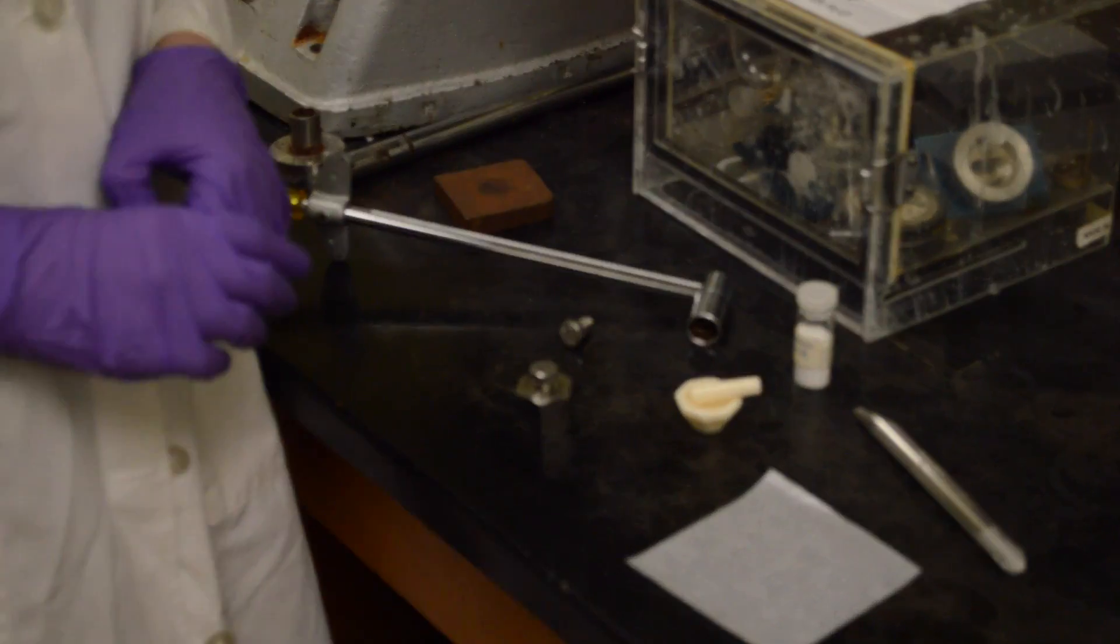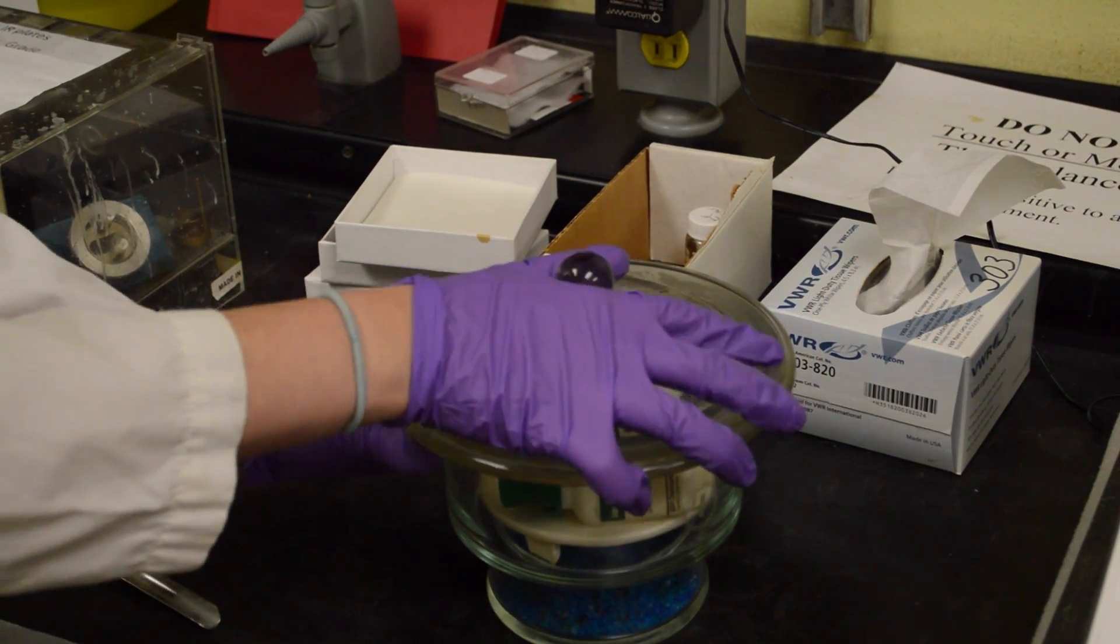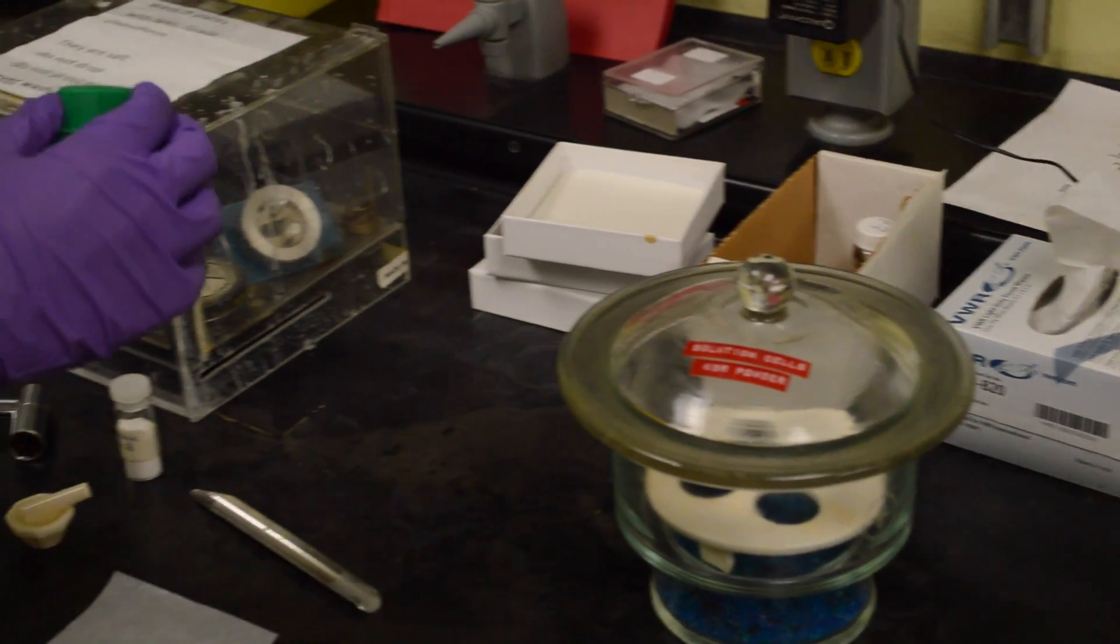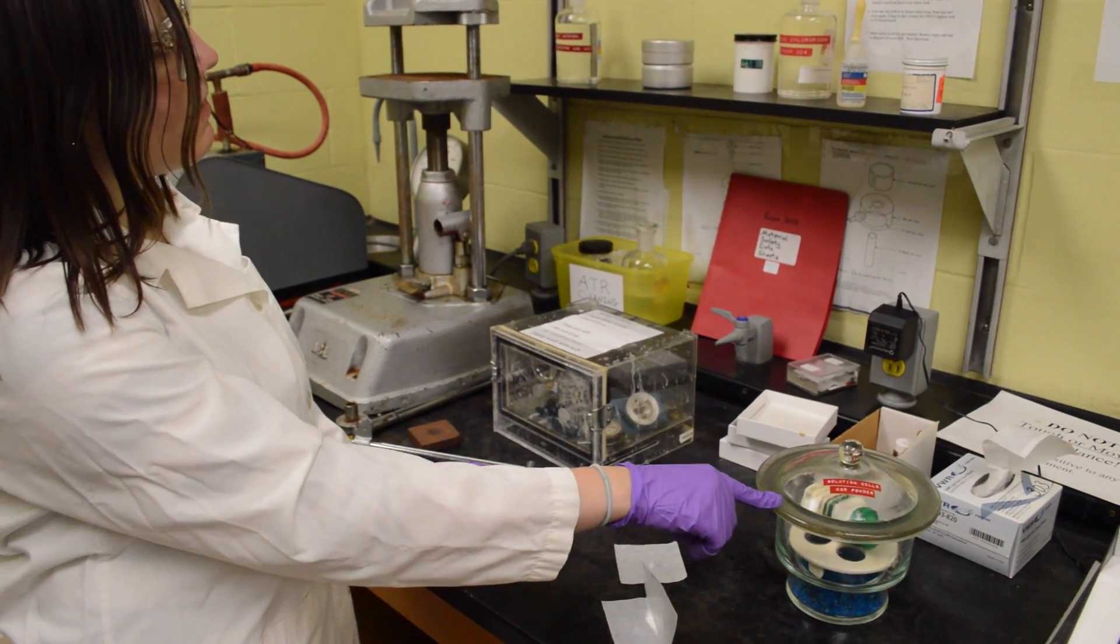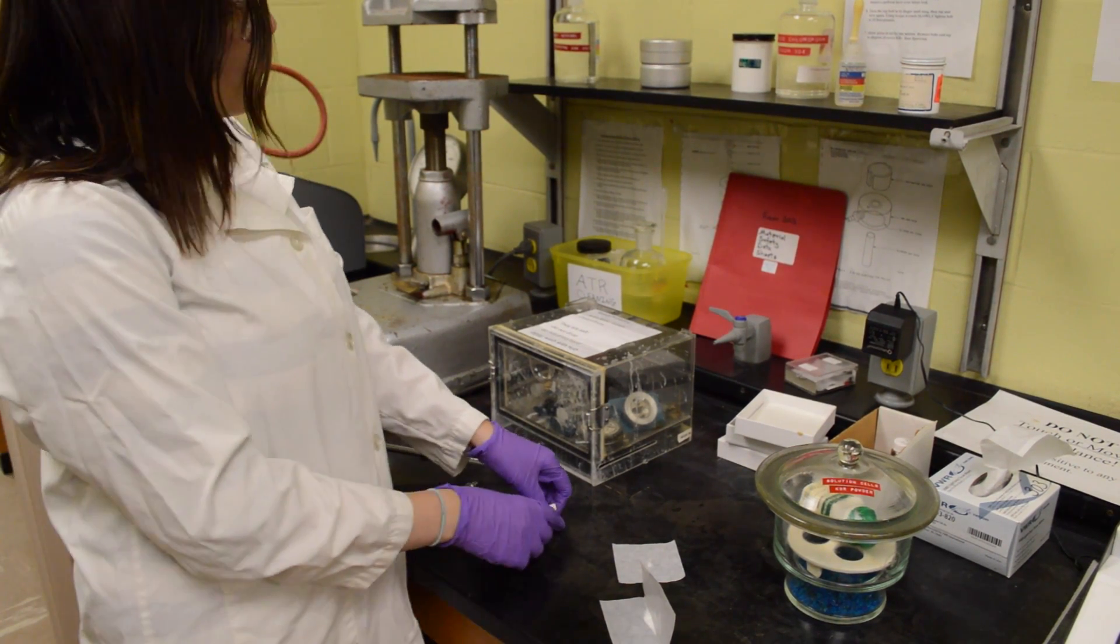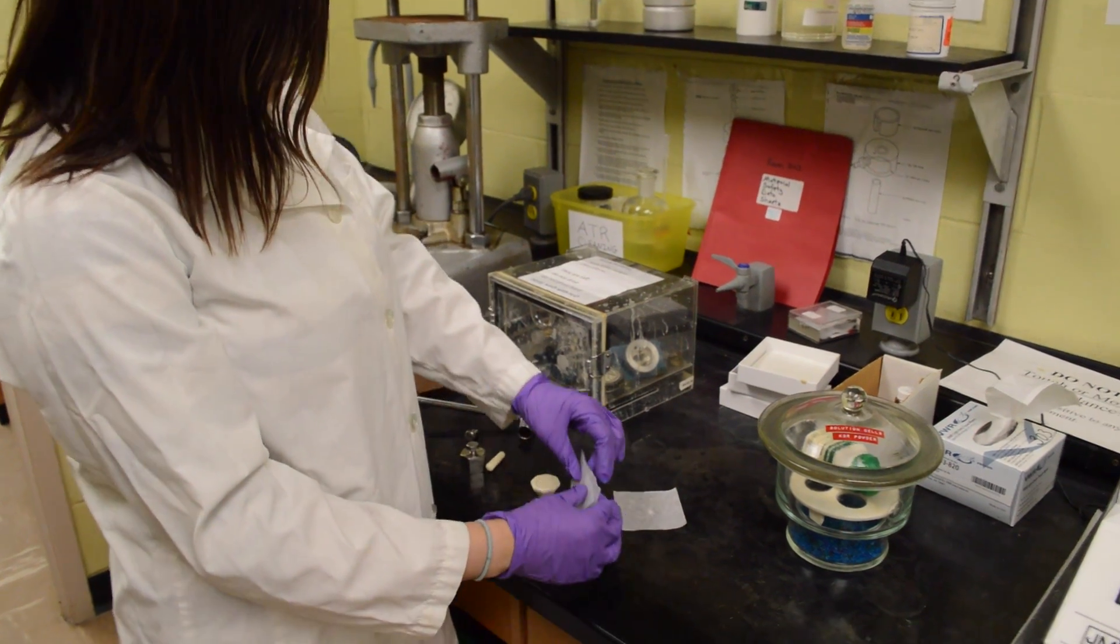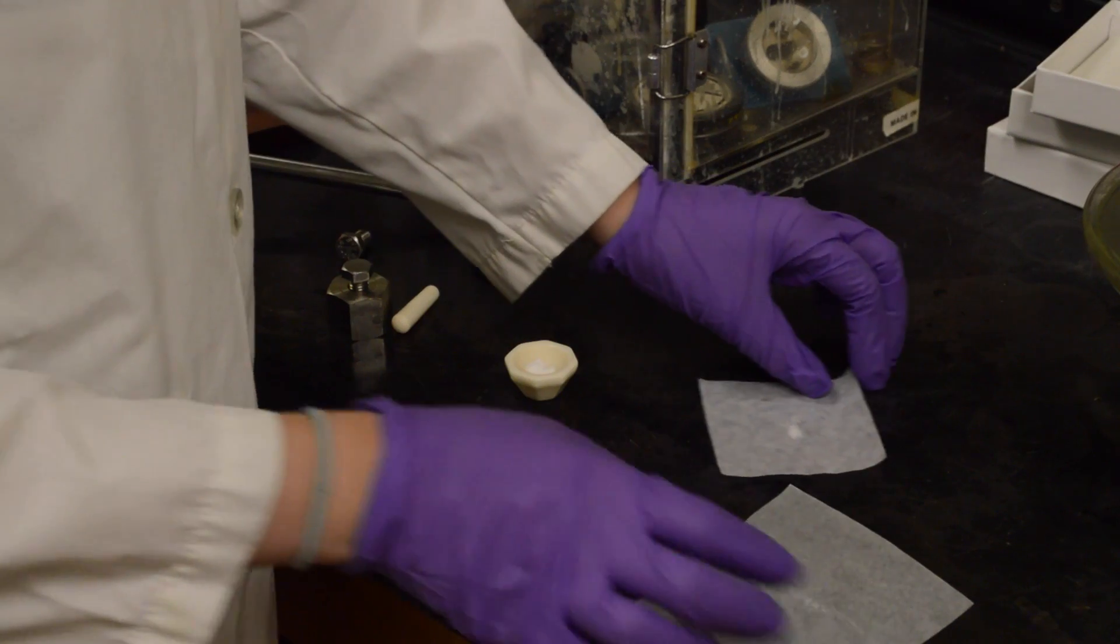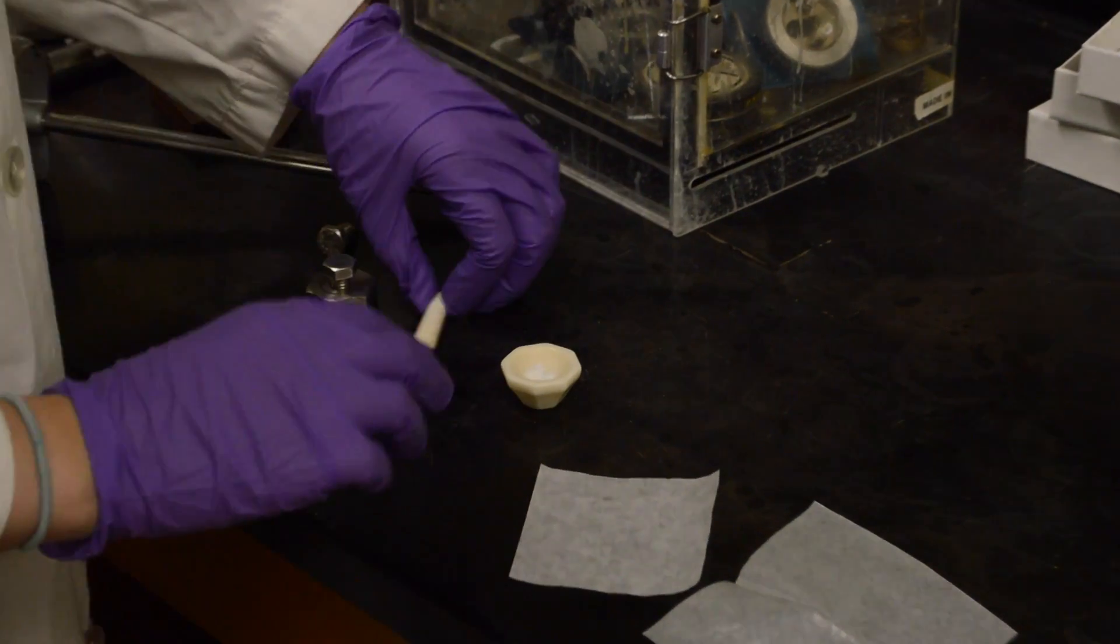Then you need to weigh out your KBR for analysis. You can get the anhydrous KBR powder out of this little holder and go to the analytical balance. We weighed out 200 milligrams of the KBR powder, as well as 2 milligrams of our sample to be analyzed. Using the mortar and pestle, we want to mix those together really well and grind them up. I'll just pour them in here, and then we grind them together.